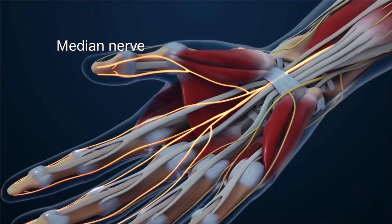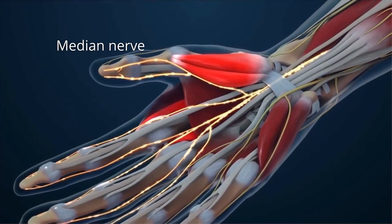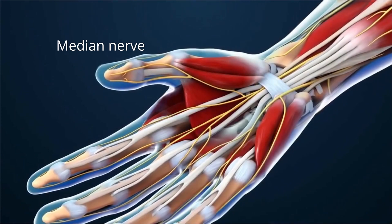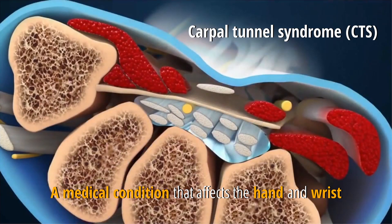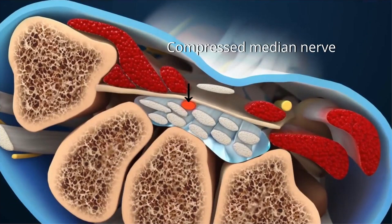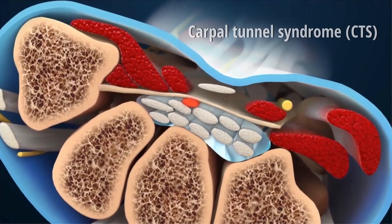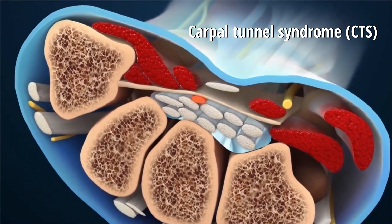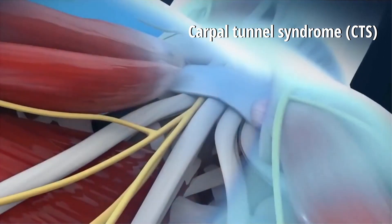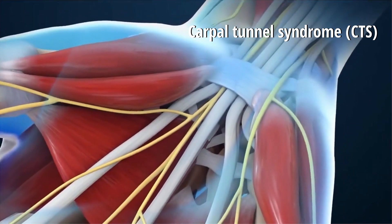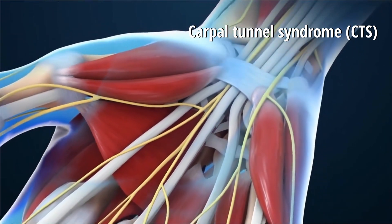The median nerve is essential for both sensory perception and controls the movement of the fingers in the hand. Carpal tunnel syndrome is a medical condition that affects the hand and wrist. It occurs when thickening from the lining of irritated tendons or other swelling narrows the carpal tunnel and compresses the median nerve, leading to a variety of symptoms and discomfort in the hand.